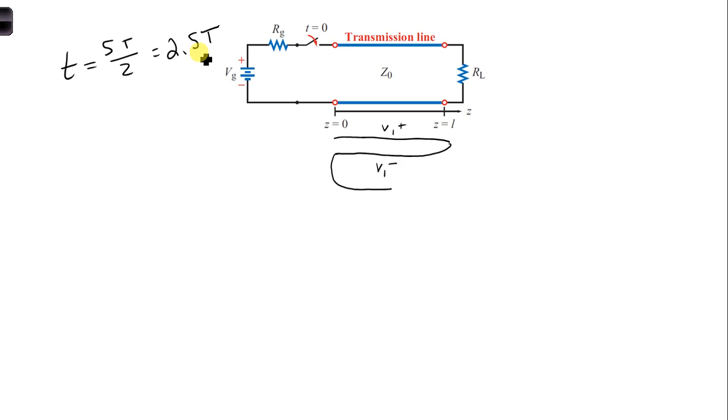for the 2.5, so for the half, we're going to get the V2 plus wave to propagate halfway back down the transmission line towards the load.